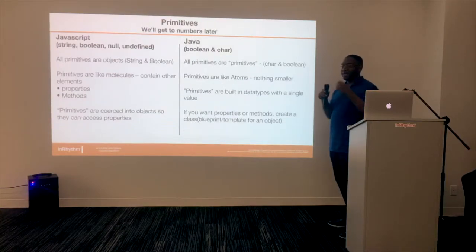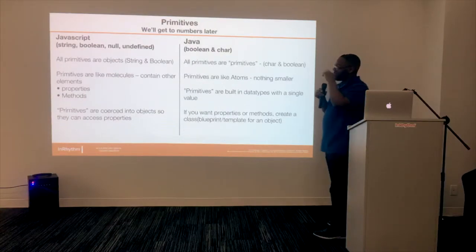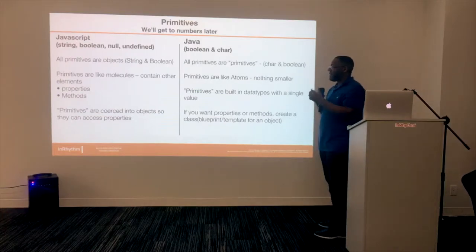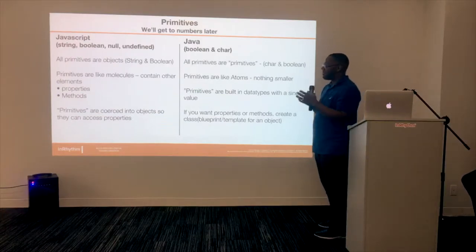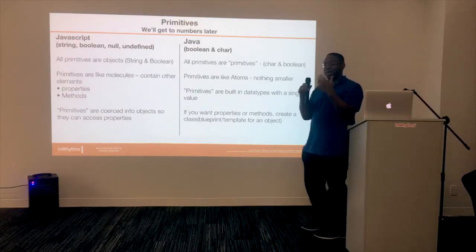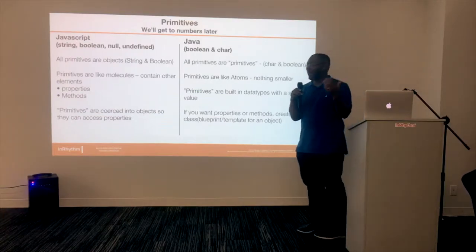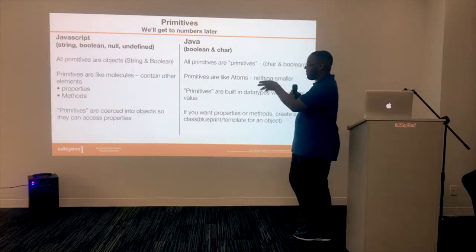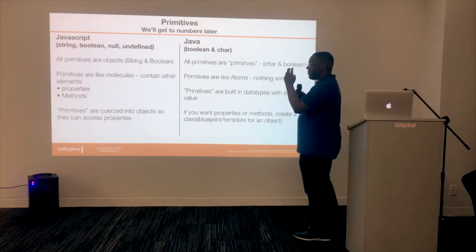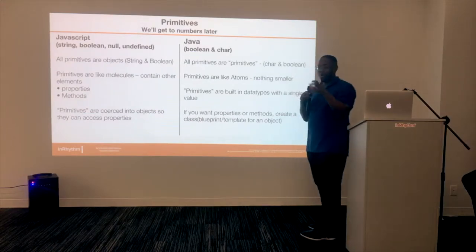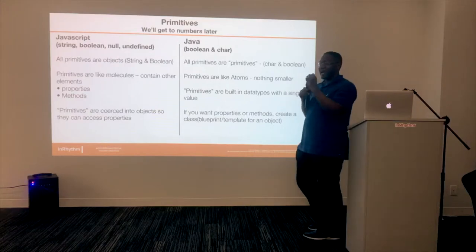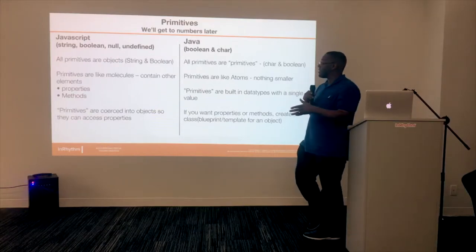Primitives — we'll get to numbers later. In JavaScript there's string, boolean, null, and undefined. All primitives are objects; they're kind of like molecules — they always contain something else. You have properties and methods, and primitives are coerced into objects so they can access those properties.